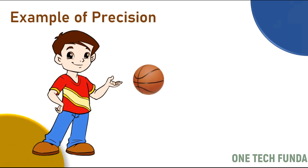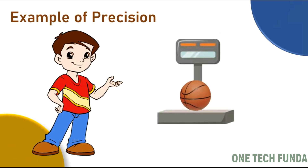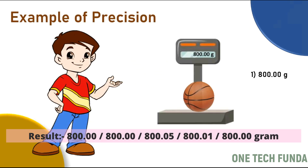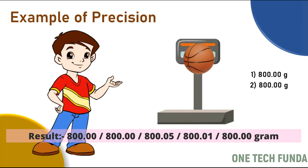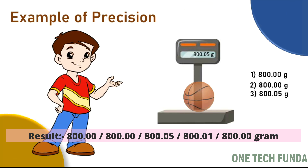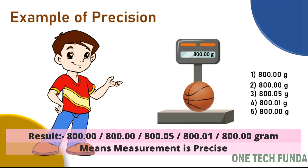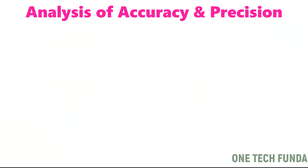Now let's see an example of precision. When a boy checks the weight of the basketball on the same machine five times, he gets: 800 g, 800 g, 801 g, 805 g, and 800 g. That means the measurement is very precise.